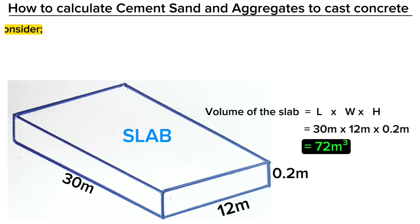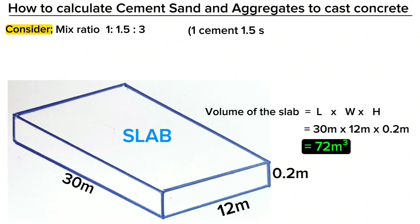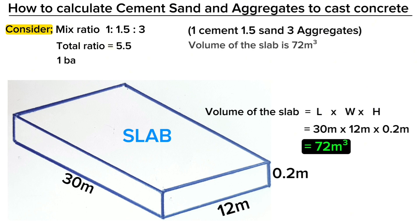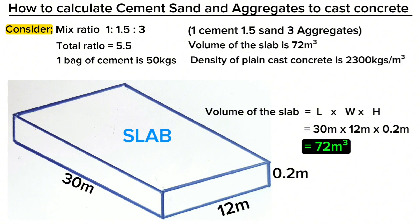Considering that we are casting concrete of mix ratio 1 to 1.5 to 3 — that is, one part of cement, 1.5 sand and 3 parts of aggregates — the total ratio is 5.5. Consider that one bag of cement is 50 kilograms, and the density of plain cast concrete is 2,300 kilograms per cubic meter.